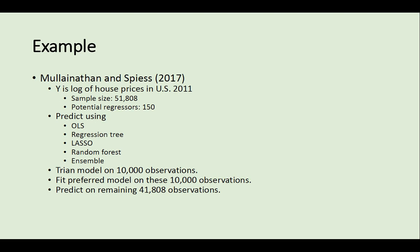They use five prediction models: a traditional economics model OLS (ordinary least squares), regression tree, LASSO, random forest, and ensemble. For example, first they train models on 10,000 observations, then they fit the preferred model on these 10,000 observations, and then they predict using this model on the remaining 41,808 observations.